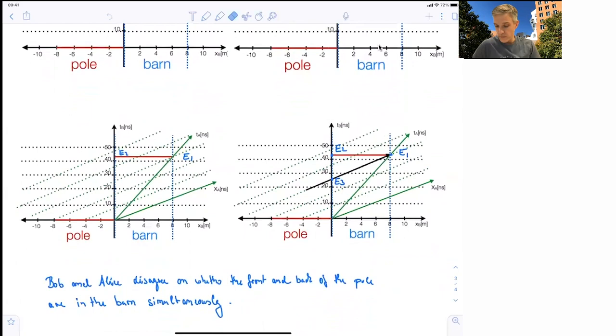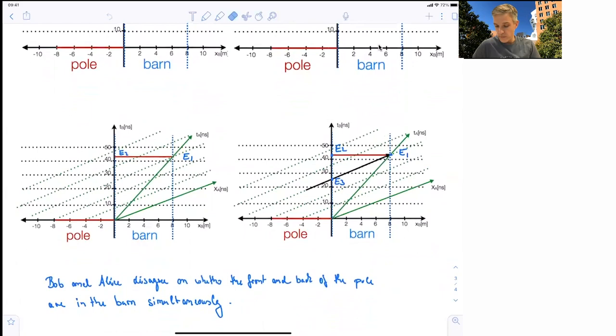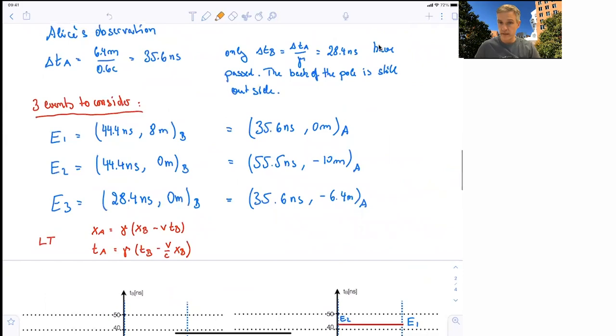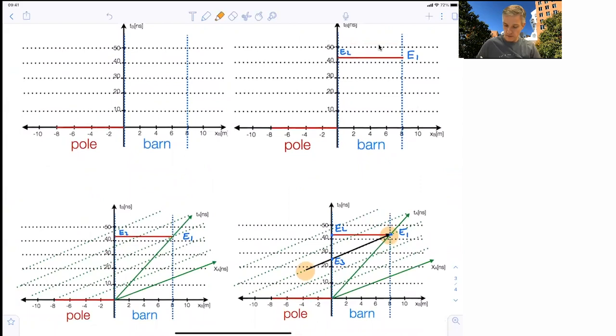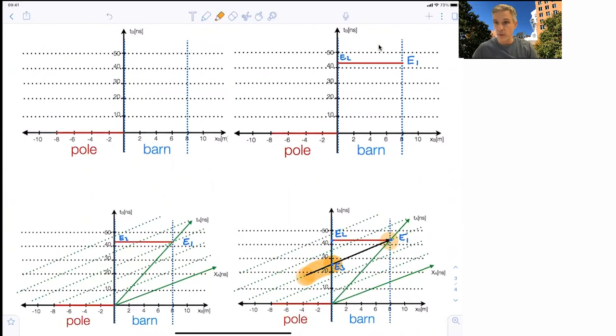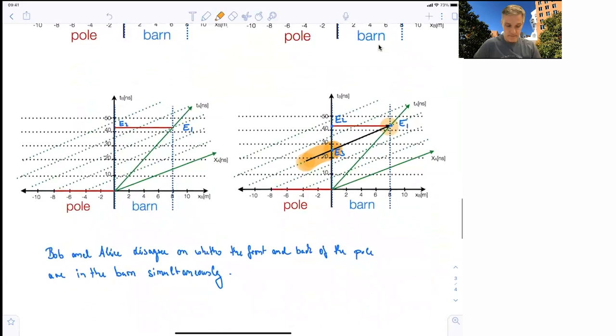But we can also show the pole on event number three. So where is the end of the pole? Let me look at this diagram here. Where is the end of the pole when the front of the pole hits the end of the barn? You see clearly there's a piece still sticking out. We saw that there's, in this event here, 6.6 meters in Alice's frame still sticking out. So we see that event number three is located here, and not all of the pole is actually contained within the barn.